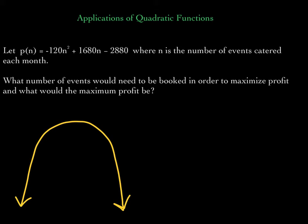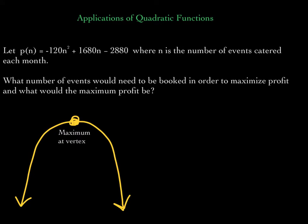It'll be a parabola opening downward because the leading coefficient is negative. Because the parabola is opening downward, there is a maximum — there is no minimum, but there is a maximum. And the maximum occurs at the vertex.